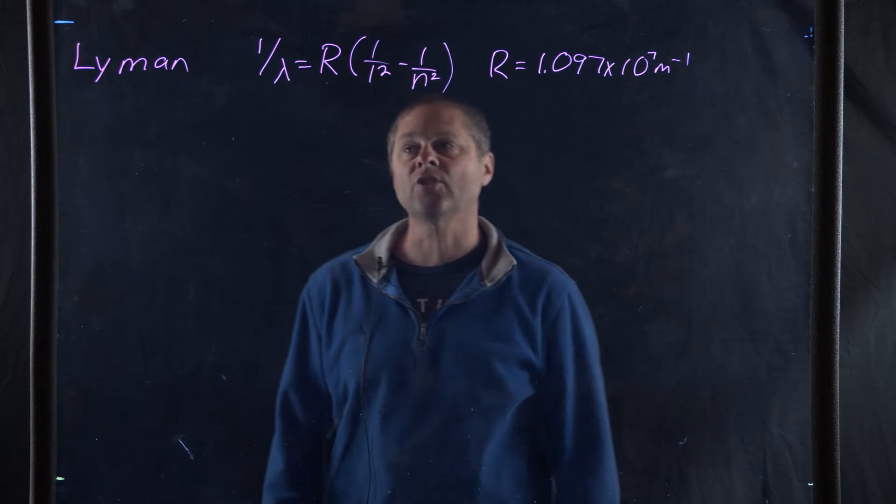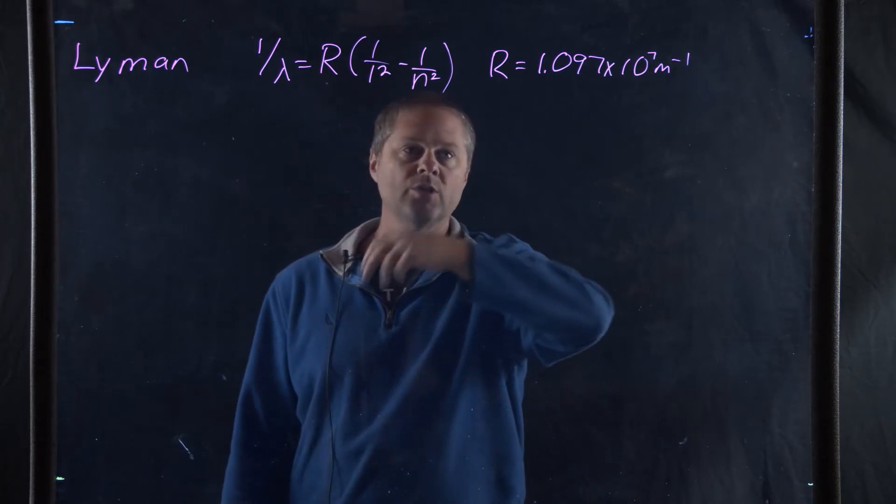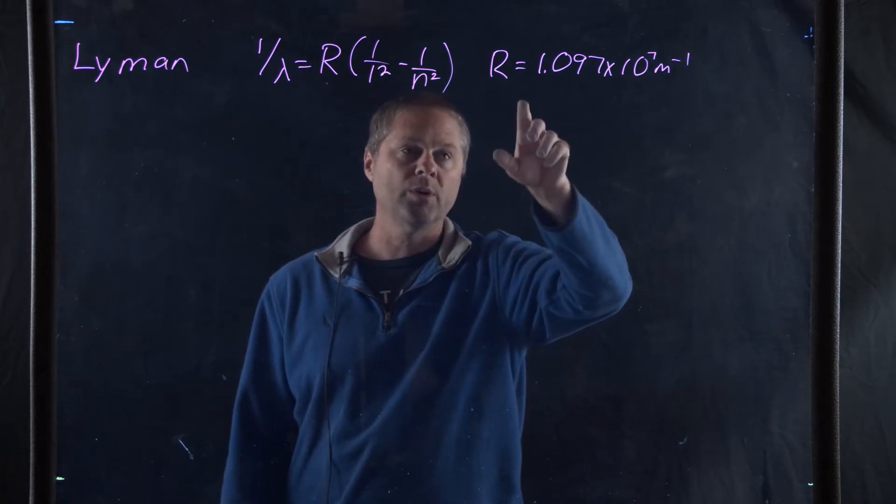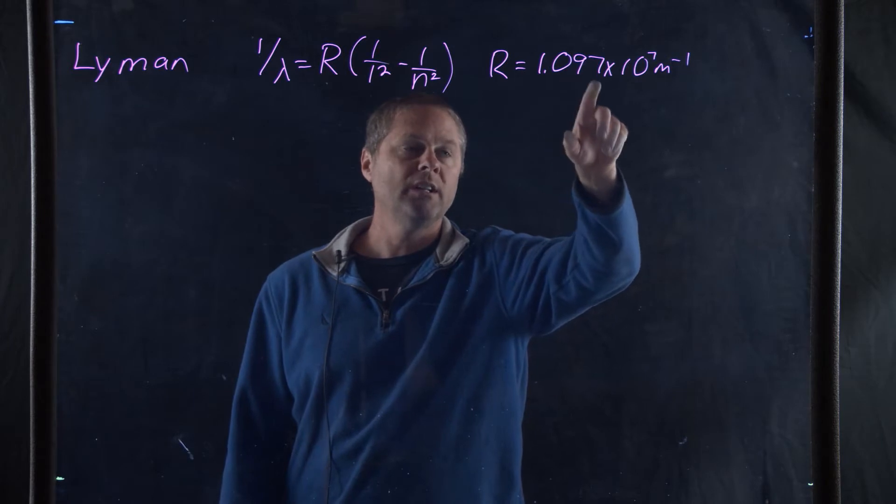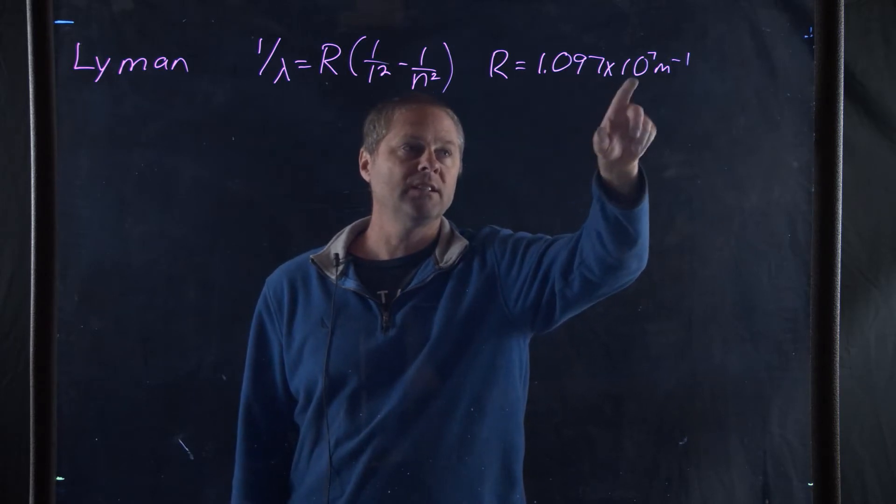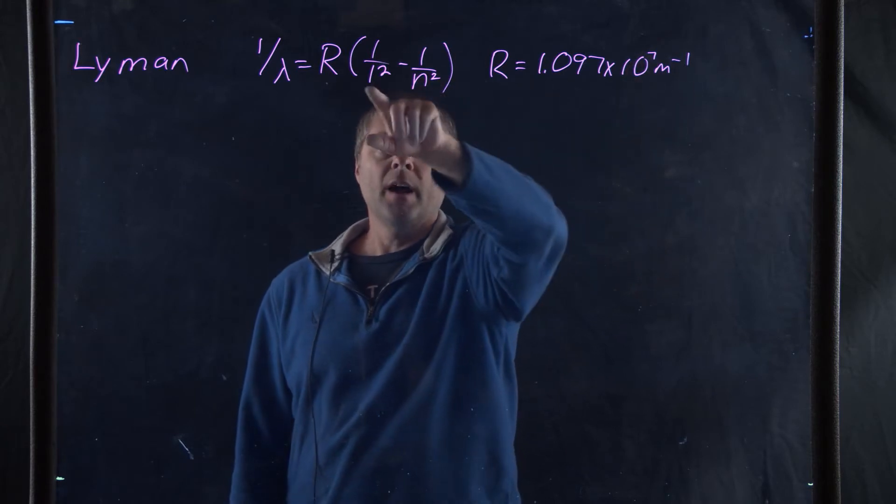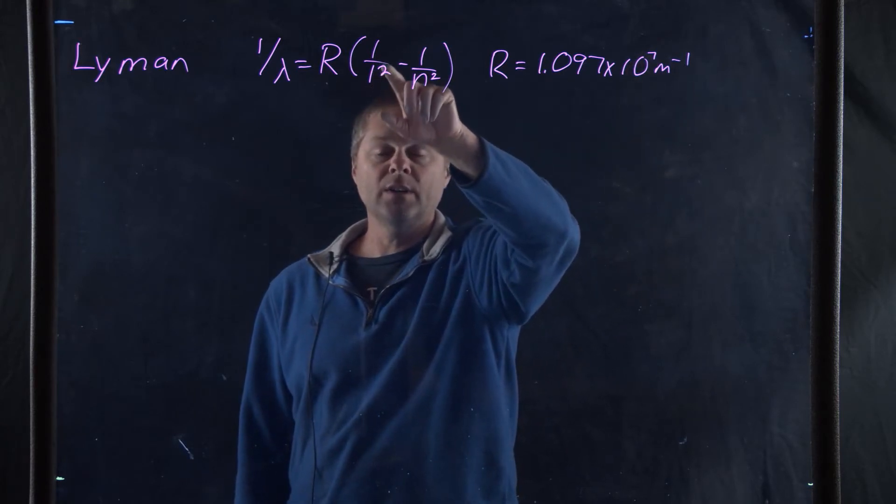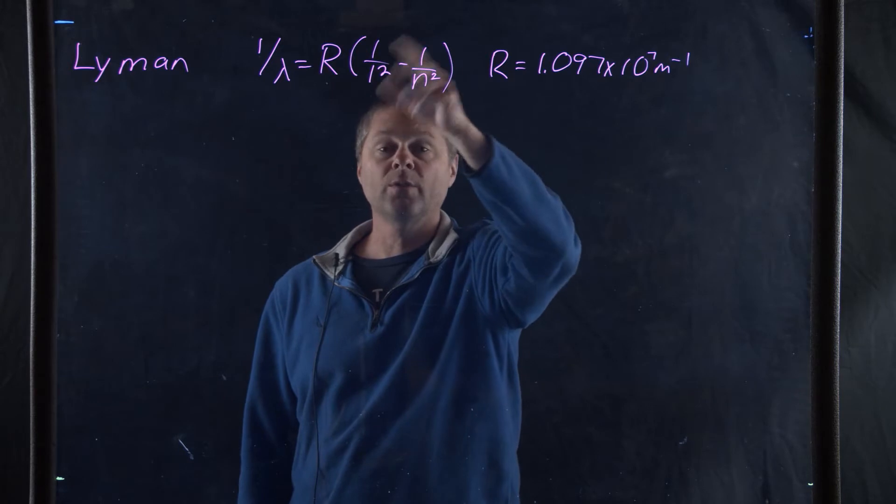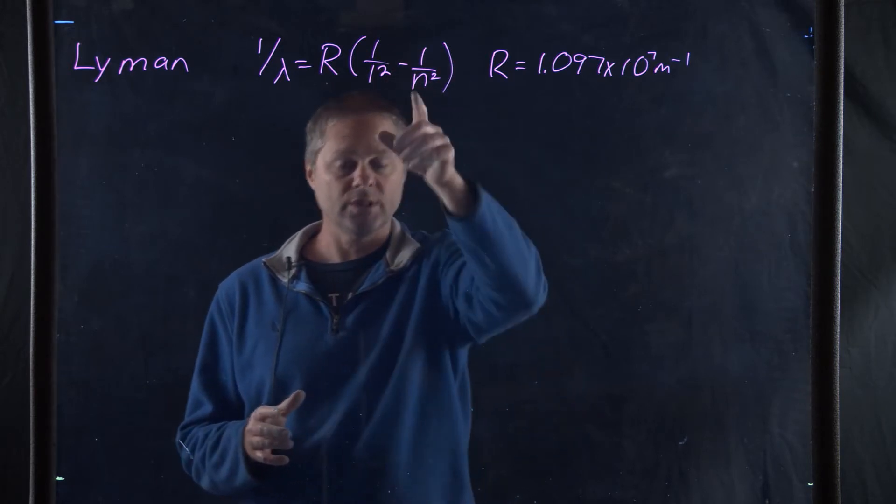Once again, we're going to use the exact same equation: 1 over lambda equals R, which is Rydberg's constant, which is 1.097 times 10 to the 7th inverse meters. However, here, instead of going either to the second or third state, we're going to the first state, the one closest to the nucleus, and then n.